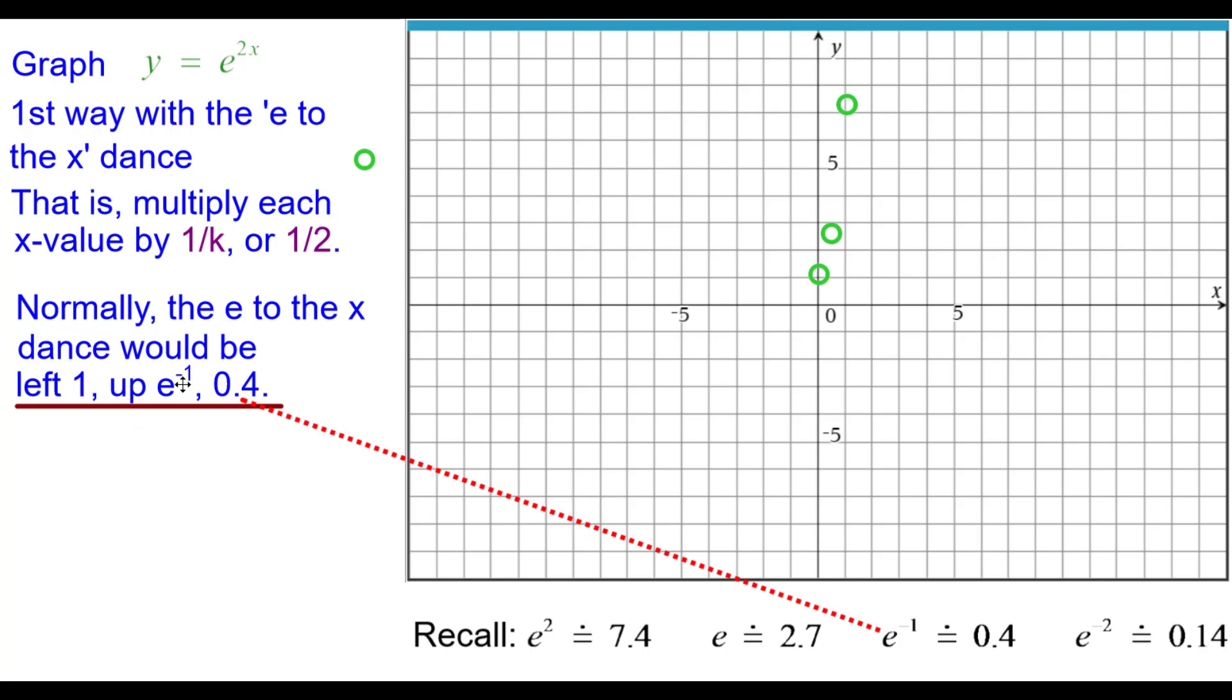Normally we go left 1 up e to the negative 1, which is 0.4. So go ahead and finish the next 2, press pause and resume when you are ready. So for ours it is going to be left 1 half up e to the negative 1, so left 1 half up 0.4. And then left 2 up e to the negative 2, ours is going to be left 1 up 0.14.